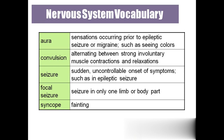'Convulsions' means strong involuntary contractions — which are not under our control. These are strong involuntary muscle contractions as well as relaxations that happen alternately, and we don't know when they will start or how to stop them.